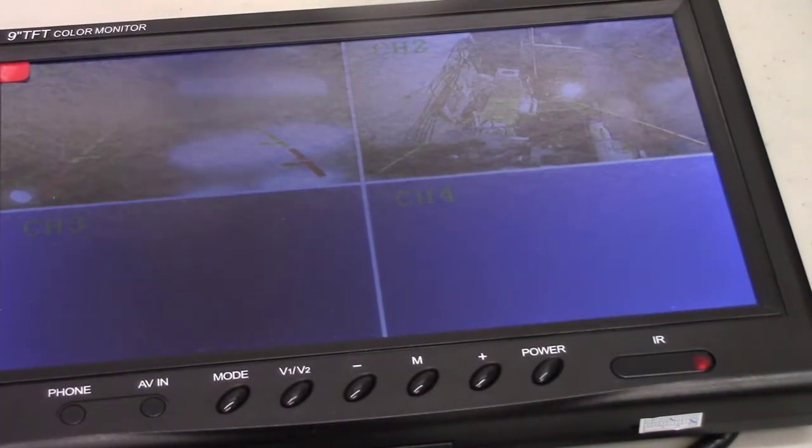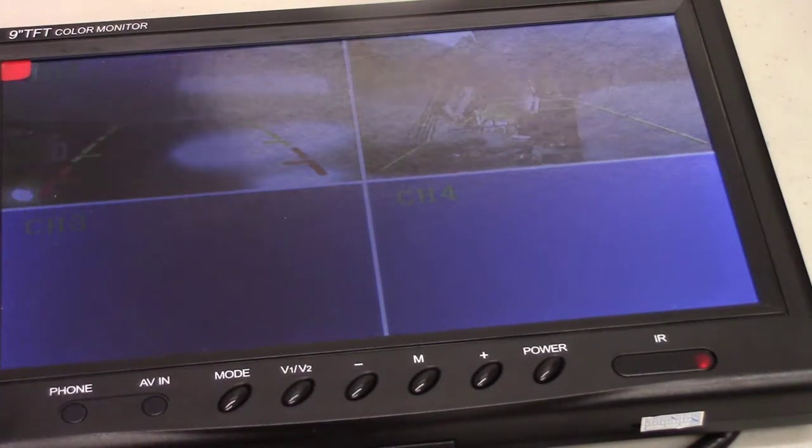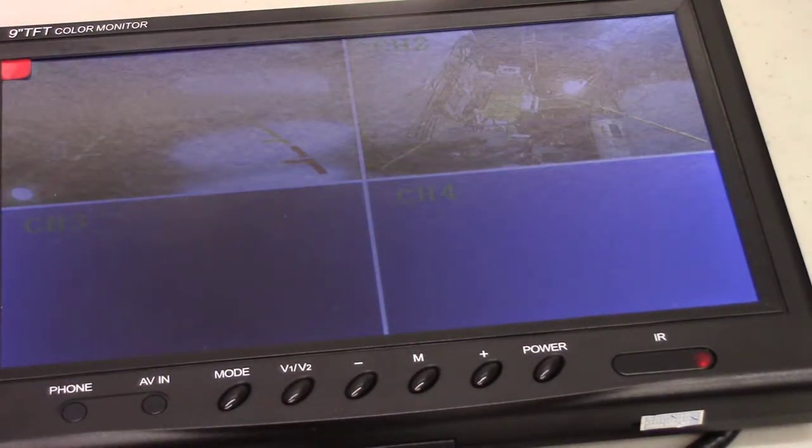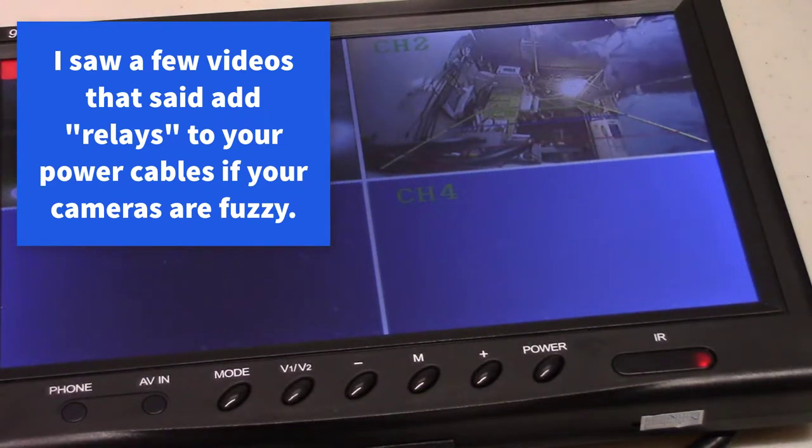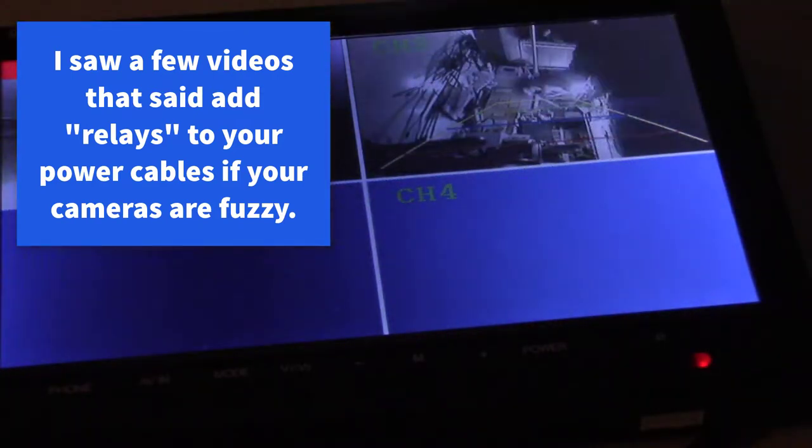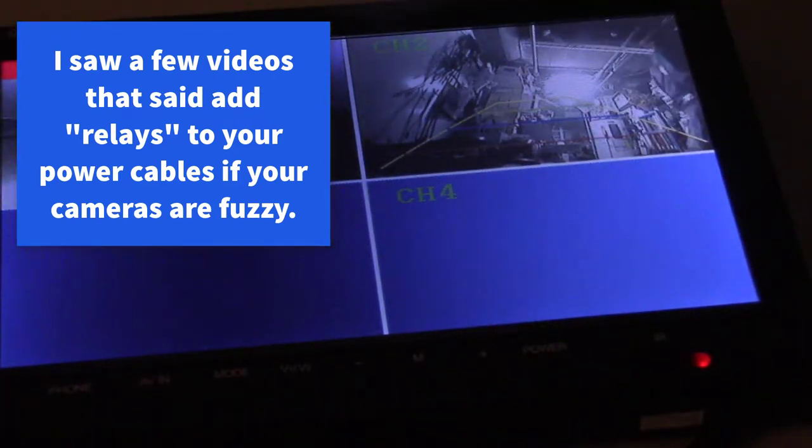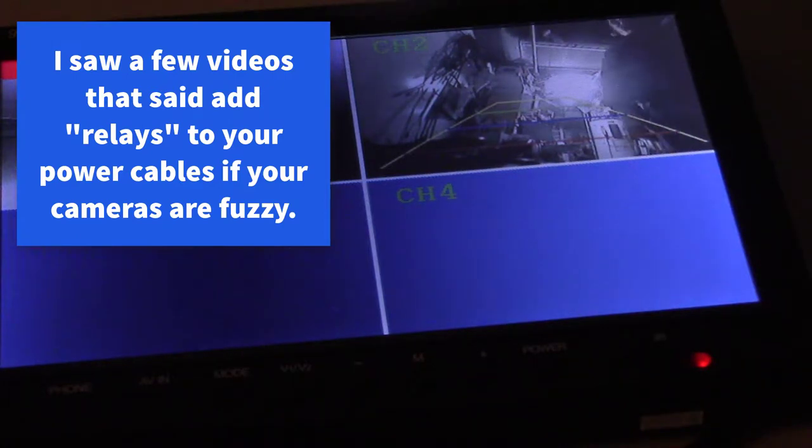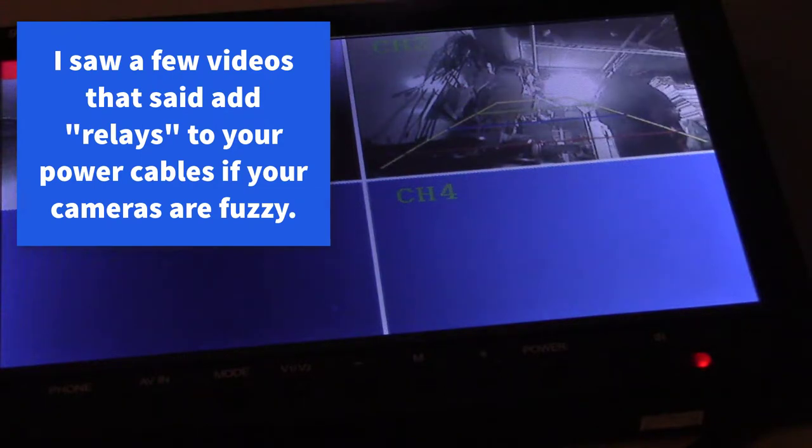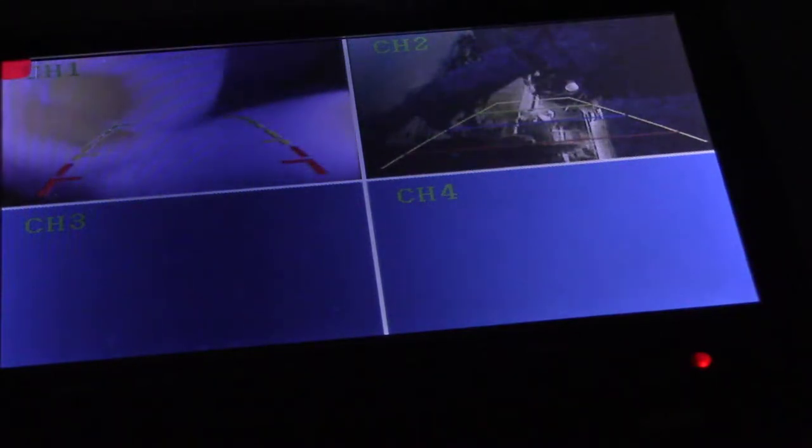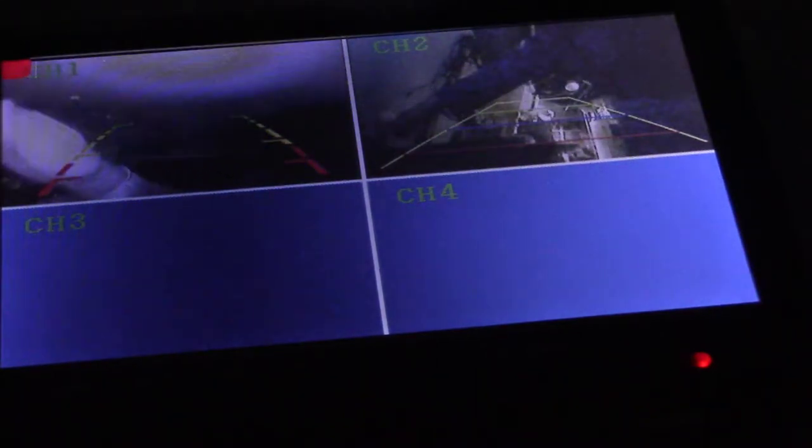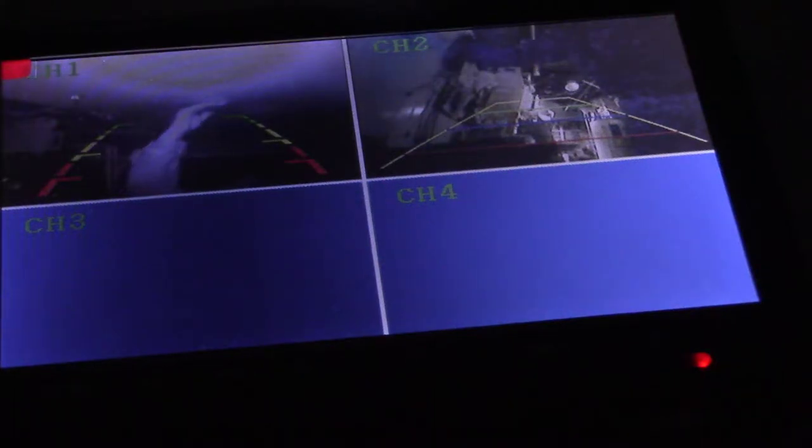So now that we have two cameras hooked up to this, they do kind of look a little fuzzy, but I think that's because of the glare. I've got fluorescent lights up here. Let's see. Oh, that's not a glare. That's the whiteboard. There's a whiteboard behind it.